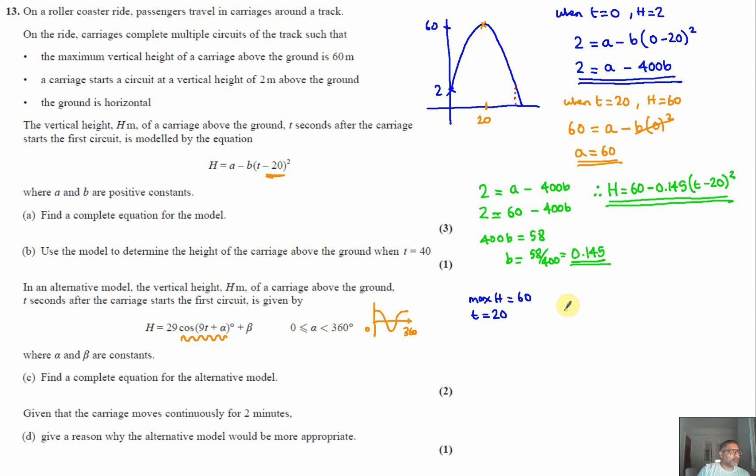So we can use that. That means that cos(9t + alpha) at its maximum will equal 1, and that occurs when 9t + alpha equals 360. Because we know that this also occurs when the time is 20, we can substitute that in. 9 times 20 is 180, so 180 + alpha is 360, so alpha must be 180 degrees.